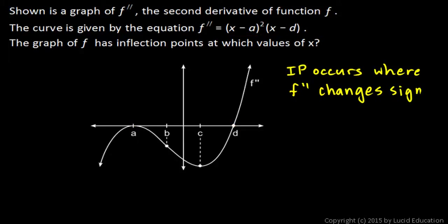x minus a is a factor, and x minus d is a factor. So a and d are zeros of this function, the second derivative.